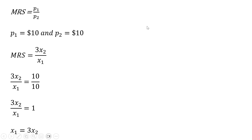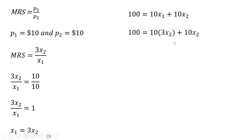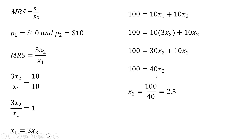Next, we recall the budget constraint and substitute x₁ with 3 times x₂, since at the utility-maximizing bundle the quantity of good 1 equals 3 times good 2. Simplifying the right-hand side: 10 times 3 is 30, so we have 30x₂ plus 10x₂. Adding those and dividing through by 40 gives us x₂ equals 2.5 units of good 2. Plugging 2.5 back in, good 1 equals 3 times 2.5, which is 7.5 units.